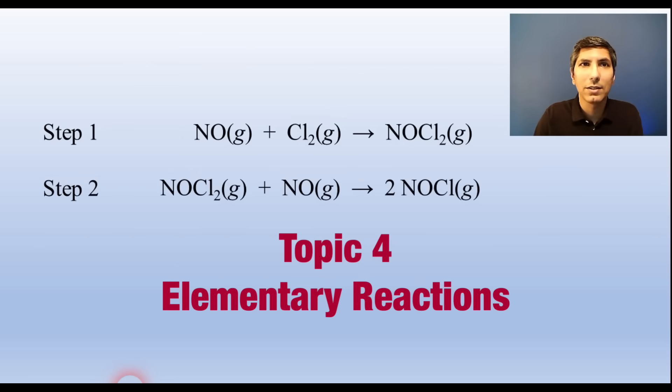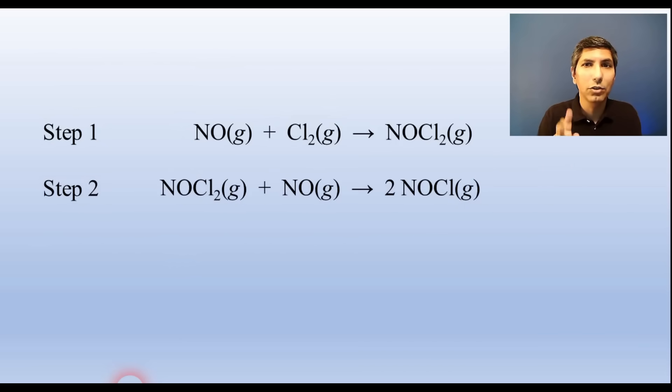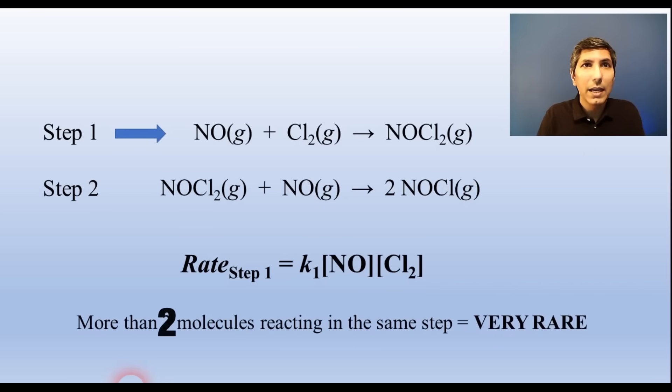Many chemical reactions take place in multiple steps. Let's take this chemical reaction that takes place in two steps. Each of those steps has its own little rate law. The rate law for the first step, just as an example, is rate equals k sub one times NO times Cl2. You could do the same thing for the second step. Notice that each of these steps has two molecules colliding. That's fairly common. In fact, it would be very unusual for any single step in a reaction to have more than two molecules colliding at once.